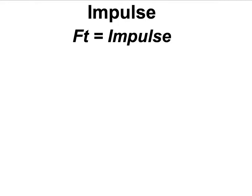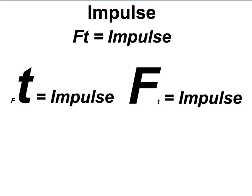The same is true when you're looking at impulse. The formula for impulse is force times time. You could have something with a small force and a large time and get the same impulse as if you had a large force and a small time. This is going to be a really key point for today.